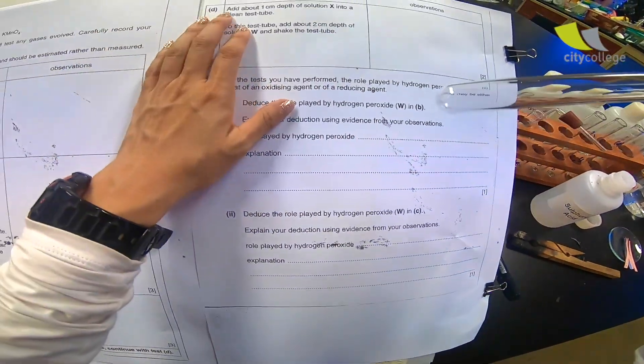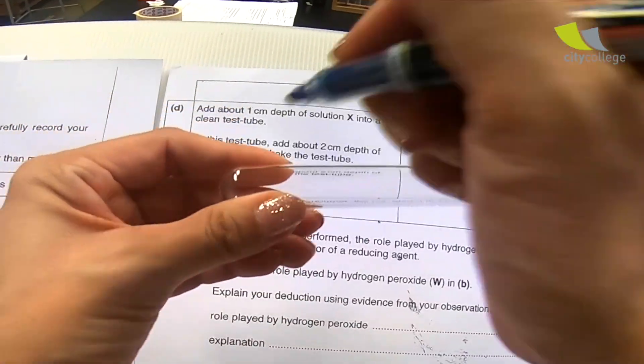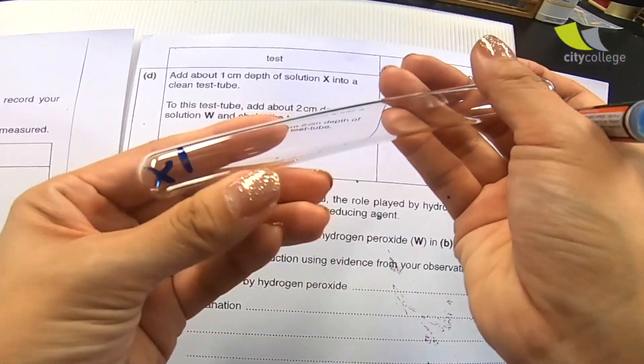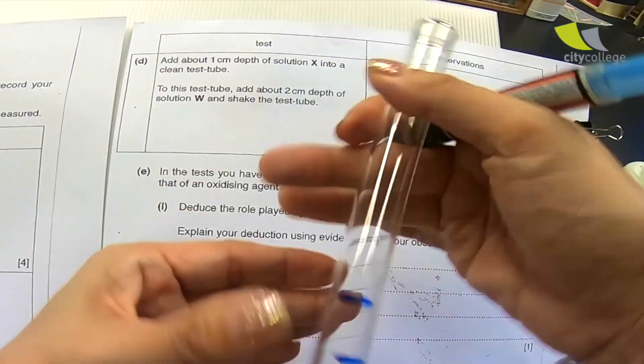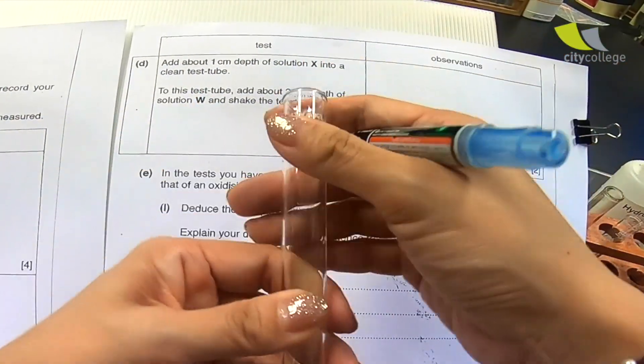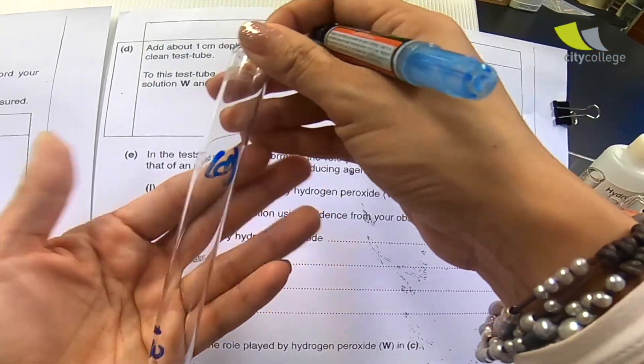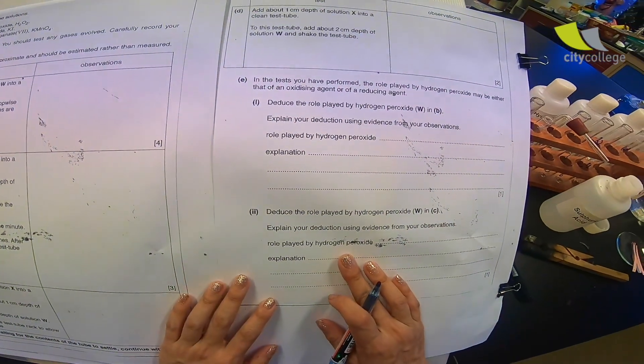We are moving to part D now. Add about 1 cm depth of solution X into a clean test tube, 1 cm X. And then to this test tube, add about 2 cm depth, 2 cm W. Shake the test tube and this is my part D. Put it back. Well, I've finished labeling my test tube.